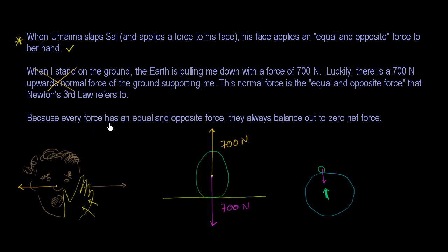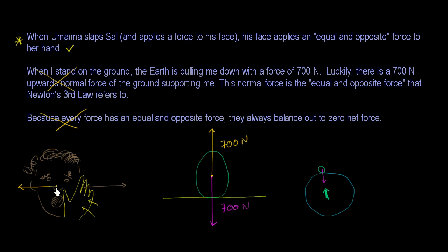Finally, the third statement: because every force has an equal and opposite force, they always balance out to zero net force. This would be the case if the equal and opposite forces were acting on the same body, but that is not the case — they act on different bodies. And obviously forces can't always net out to zero, because then you would never have any net force and you would never see anything accelerate. So this is also false. The equal and opposite forces don't act on the same body. These balancing forces here are a function of the environment — they are not the equal and opposite force. The opposite forces act on different bodies, so they don't net out when you think about what the net forces are on one of the bodies.